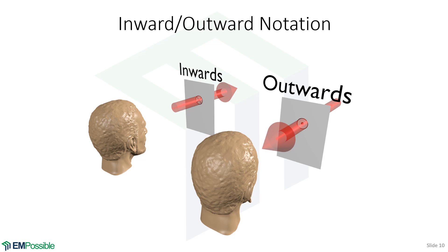Here's a way to visualize the inward and outward notation. Let's say this is your head and your face. If you see on paper a circle with a cross in it, we're talking about a vector pointing away from your face — like you're looking at the fins at the back of an arrow. If you see a circle with a dot in it, you're looking at a vector coming toward your face, like you're looking at the tip of an arrow. So now you know what that notation means and how to visualize it.